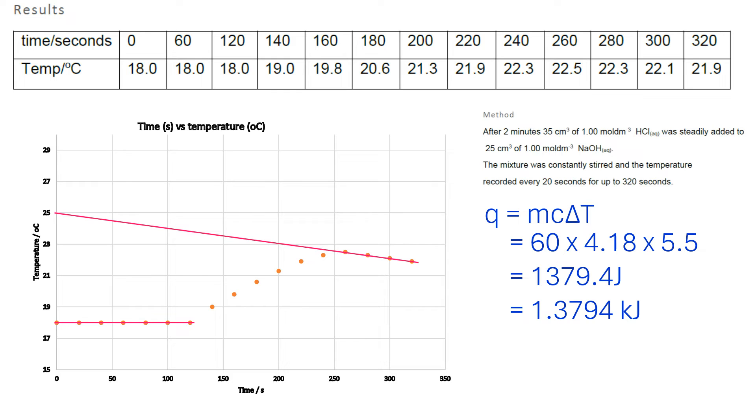The pink lines give you the two lines of best fit, and the highest point that the extrapolation backwards gets to, which is here—this amount in degrees Celsius on the y-axis is your ΔT.